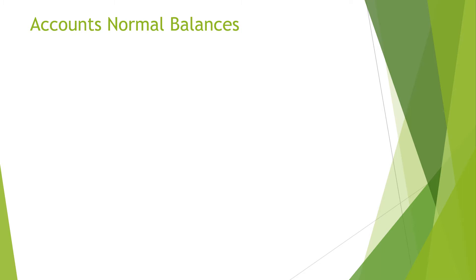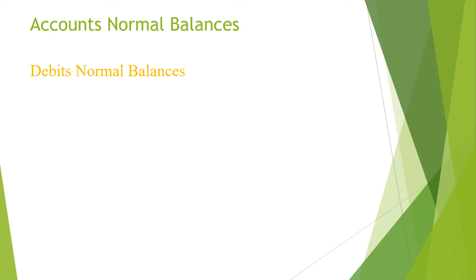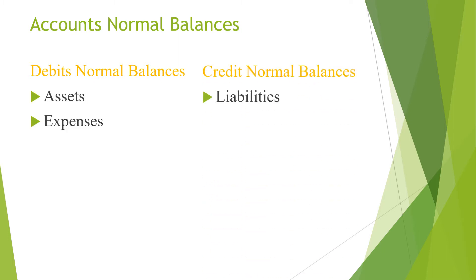To understand debit and credit you have to know the normal balances of accounts. We have asset accounts, liability accounts, expenses accounts, and revenue accounts. Assets and expenses have debit normal balances. They are always on the debit side.